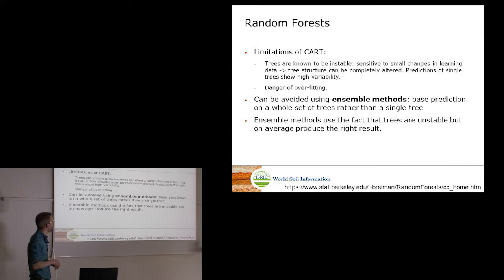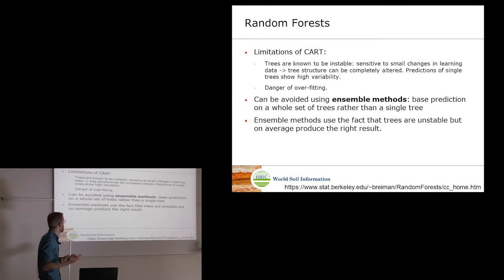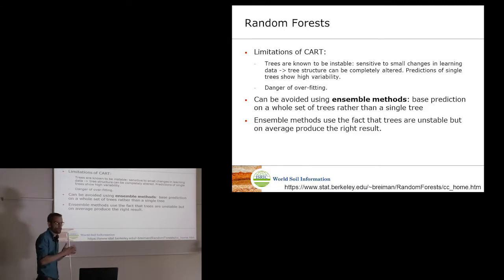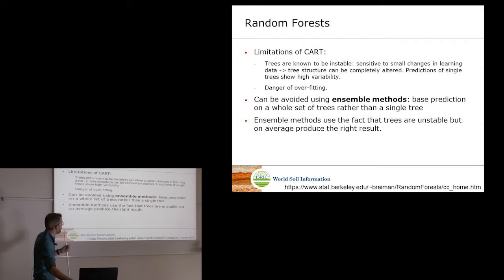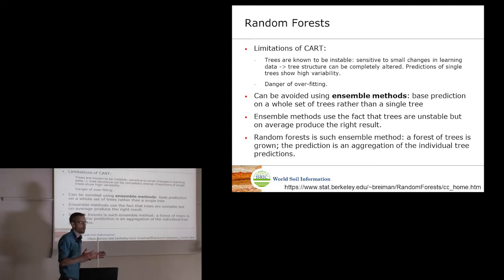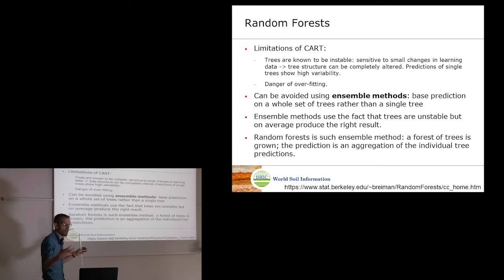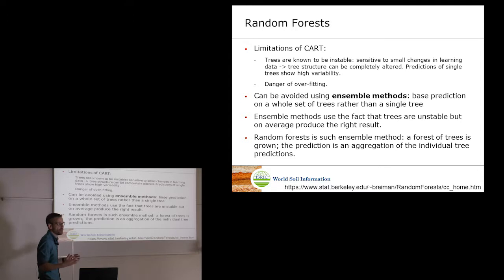These limitations can be avoided using ensemble methods. Instead of using one tree to make predictions, you use a whole set of trees — a forest. Ensemble methods exploit the fact that one tree can be unstable, but on average, when you have many trees fitted to your data, the results are quite accurate. A random forest is such an ensemble method. Instead of one tree, you grow a forest of 500, 1,000, or even 2,000 trees. Each tree makes a prediction, and in the end you average those predictions to get your final prediction.